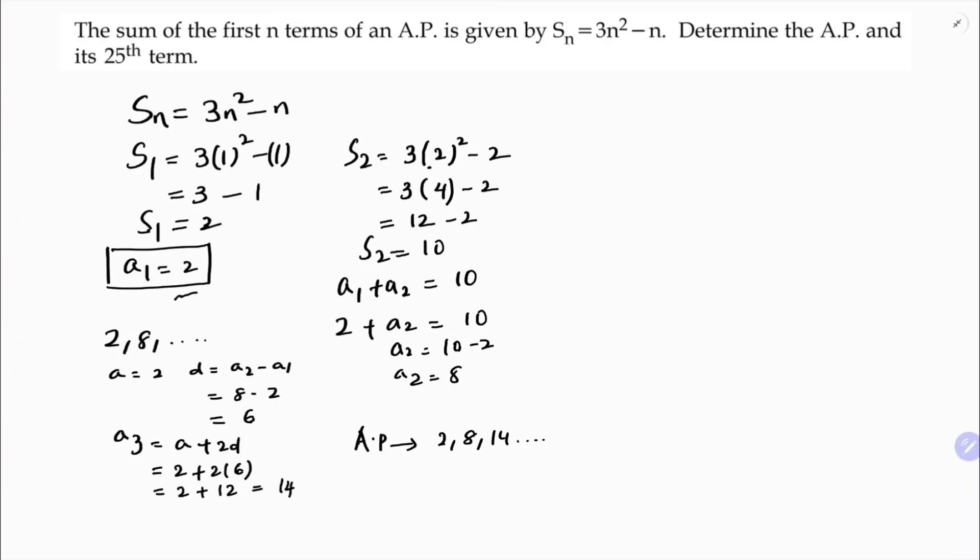Now they are asking for the 25th term. The formula is a_n equals a plus (n minus 1) into d. So a_n equals a plus 25 minus 1 into d, so a₂₅ is a plus 24d.